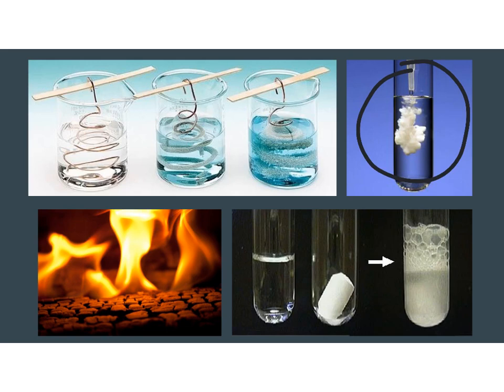Over on the left here, we have silver nitrate solution and copper wire. And you can see a definite color change, right? We have a clear solution in the beginning and then a blue solution at the end. You can also see a substance that has formed that is a different color than the copper wire was initially.